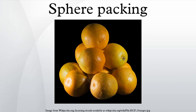Gauss proved in 1831 that these packings have the highest density amongst all possible lattice packings. In 1611, Johannes Kepler had conjectured that this is the maximum possible density amongst both regular and irregular arrangements. This became known as the Kepler conjecture. In 1998, Thomas Callister Hales, following an approach suggested in 1953, announced a proof of the Kepler conjecture. Hales' proof is a proof by exhaustion involving checking of many individual cases using complex computer calculations. Referees said they were 99% certain of the correctness of Hales' proof. On 10 August 2014, Hales announced the completion of a formal proof using automated proof checking, removing any doubt.